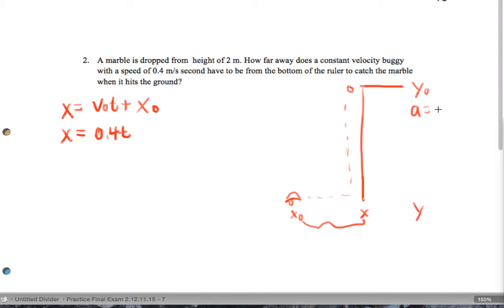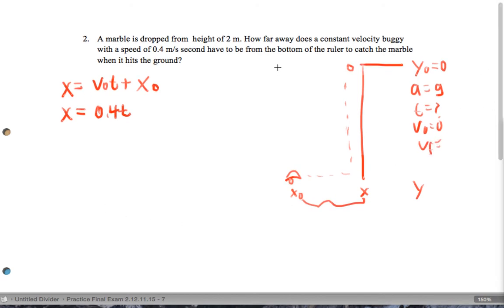I know the acceleration is going to be g because it's falling. I don't know the time. That's what I'm actually looking for. And I know that the initial speed is 0. We'll say the initial position is 0. We don't know what v final is. Let's see if we can figure out the time to fall since we know that y final is 2.